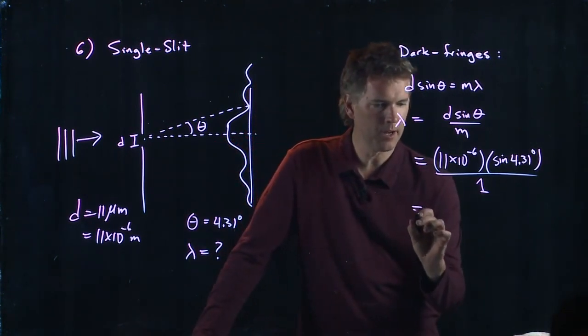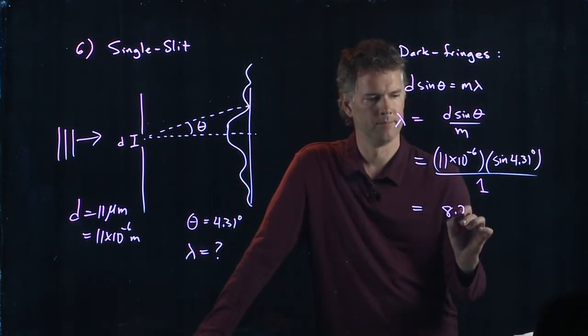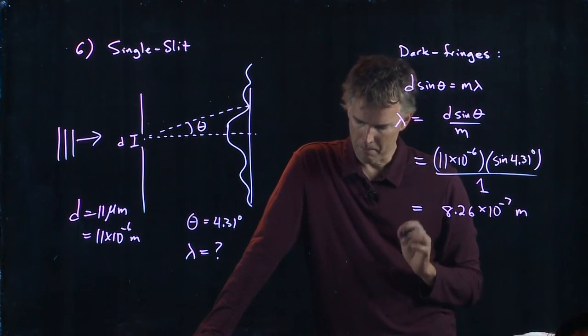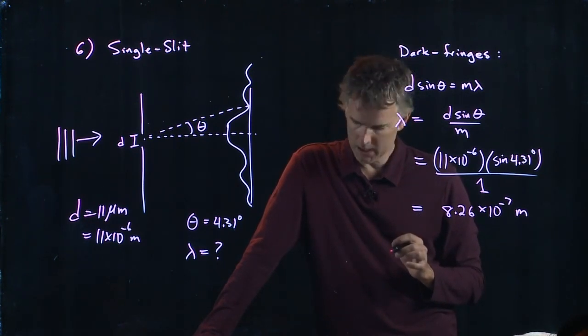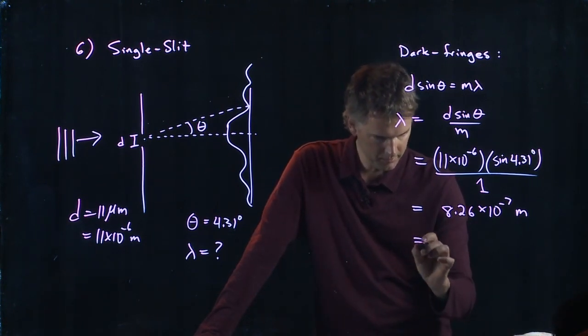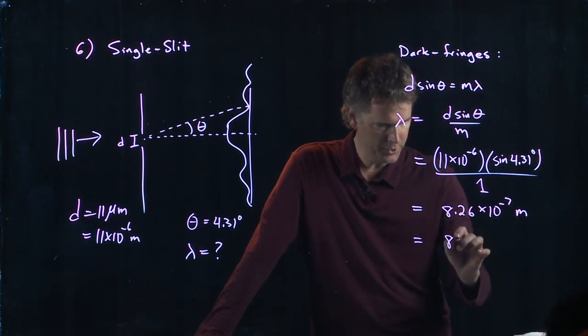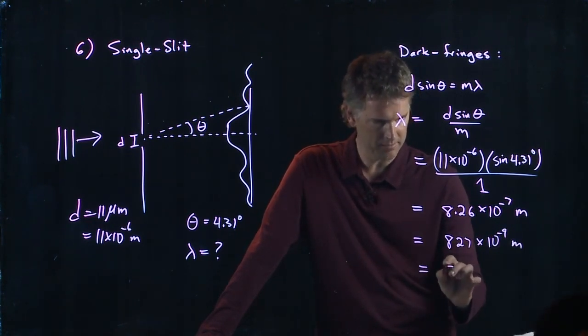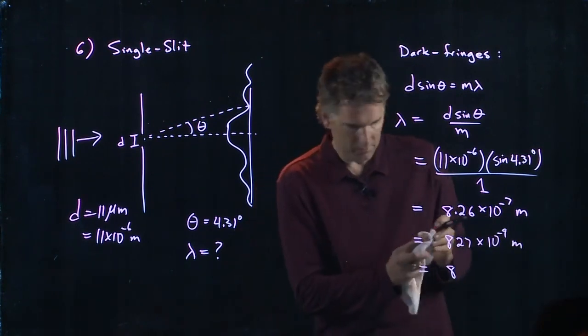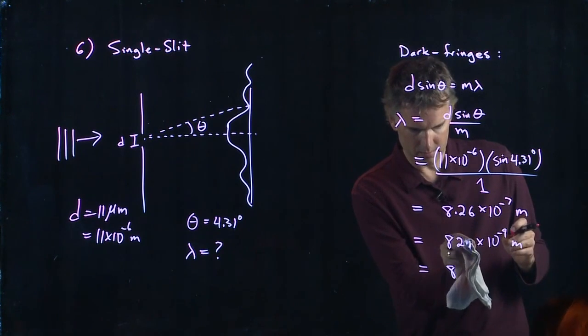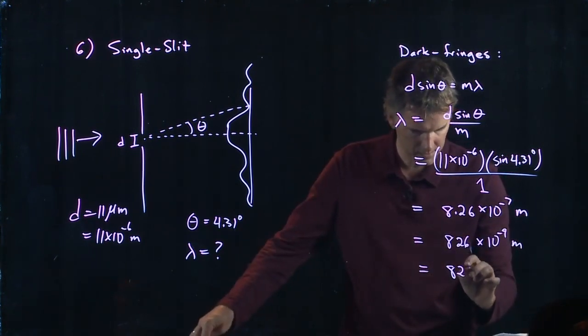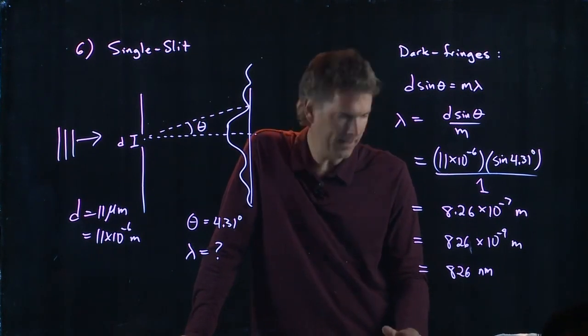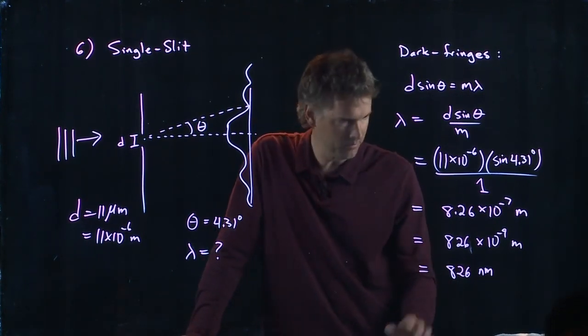Punch in all these numbers into your calculator and tell me what you get. 8.26 times 10 to the negative 7. And the units are of course meters. And if we look at the answers, all the answers say nanometers, so we need to convert this to nanometers. And if I move this over 2, then I have to subtract 2 from the exponent and 10 to the minus 9 is a nanometer. So this is 826 nanometers. And if you look at the answers, the closest one is answer A, 827 nanometers. So there's probably something else after that.